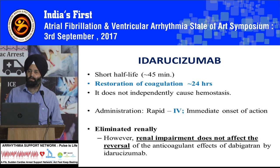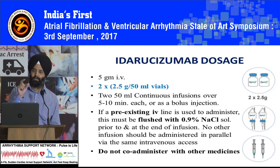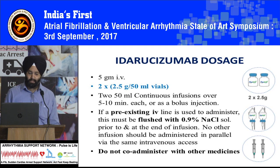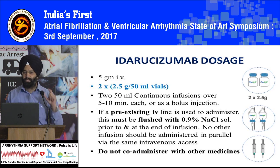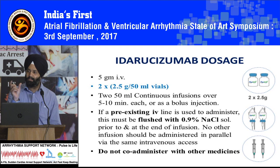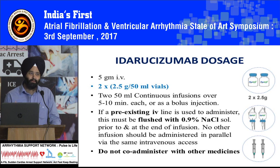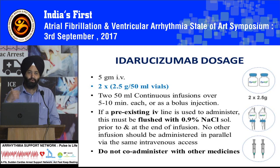It is given intravenously in a dose of 5 grams. There are two vials available — 2.5 grams per 50 ml vial. You have to give two vials, either as a continuous infusion or as a bolus injection, over a period of 15 minutes. They can be given 5 to 10 minutes apart. They can be given in a pre-existing IV line, but you have to first flush it with normal saline, then give it, and then flush again if you are to give some other medication. You are not to combine any other medication with this drug.